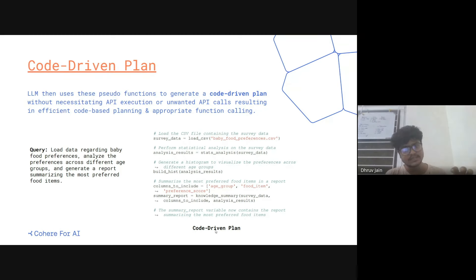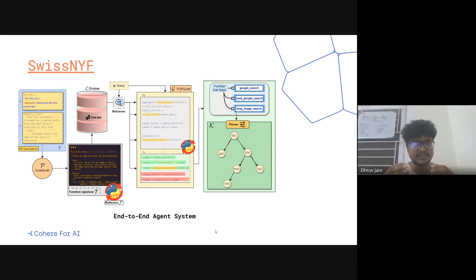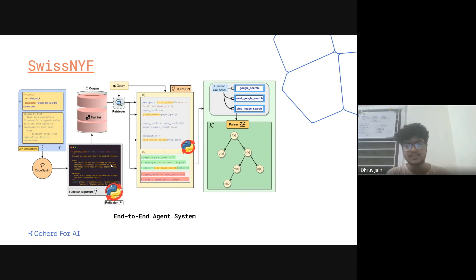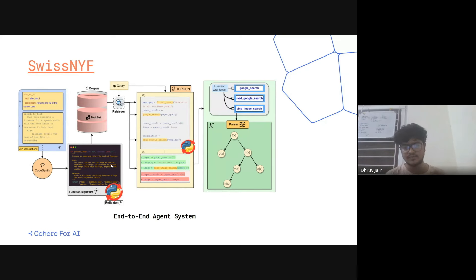The key point is you are doing this in one go using code generation — you are not executing APIs at each step. This is our end-to-end pipeline, which we named SwissKnife. Here you can see it takes function descriptions and generates function signatures. For self-reflection: sometimes the generated function signature might not be syntactically correct — there might be Python-related errors. So after generating the function signature, we execute it to check for errors. If there is an error, the original function signature and the error are given to the LLM, which does self-reflection and refines its response to generate a better function signature.